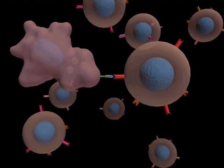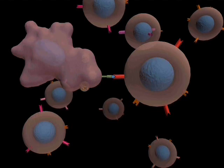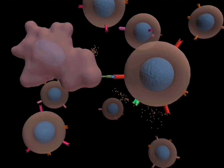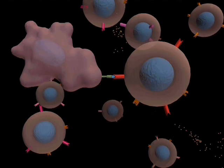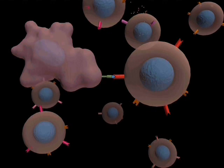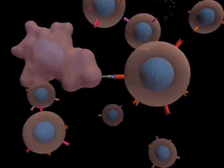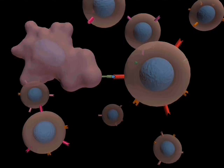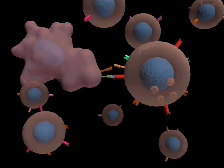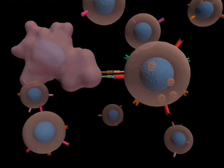The antigen-presenting cell interacts with the T-cell and releases cytokines, such as interleukin-1, which cause the expression of interleukin-2 receptors on the surface of the T-cell. There are also crucial interactions between pairs of co-stimulatory molecules on the surface of each of the two cells.